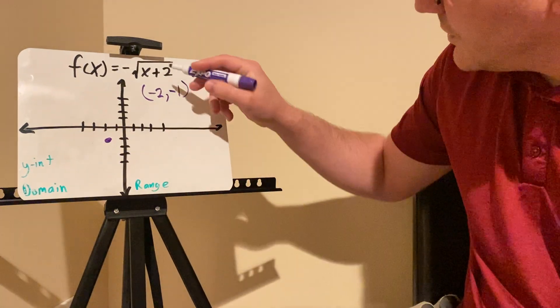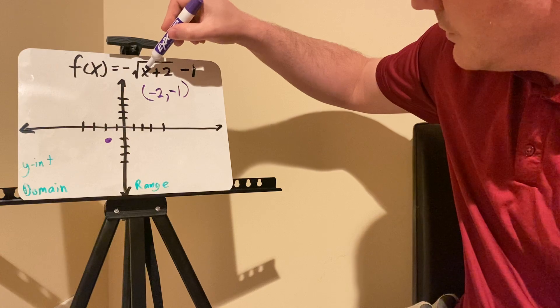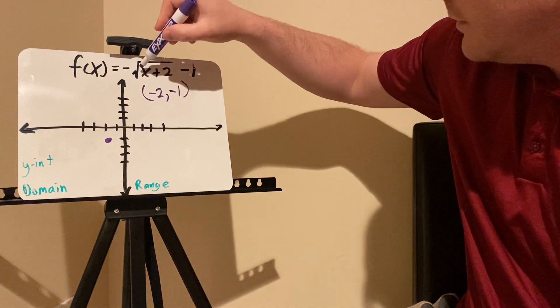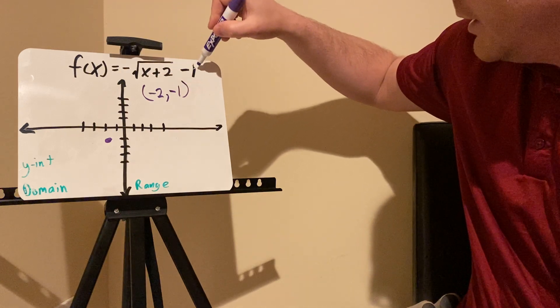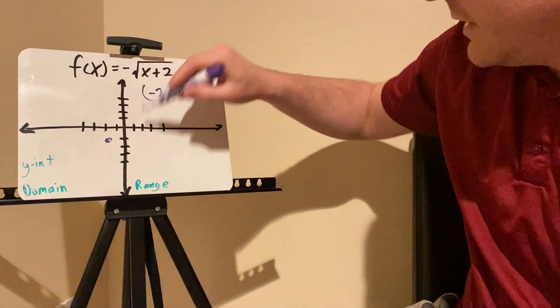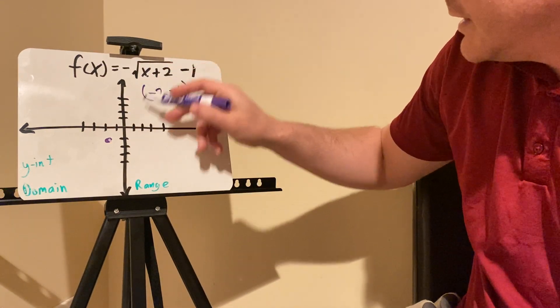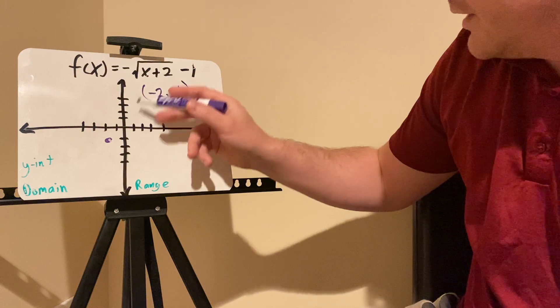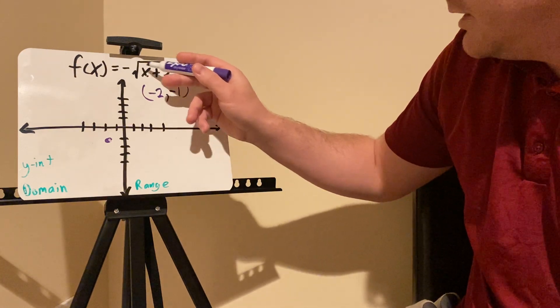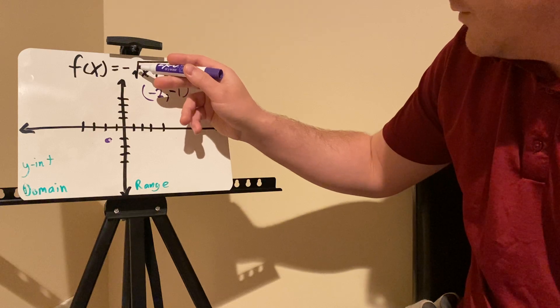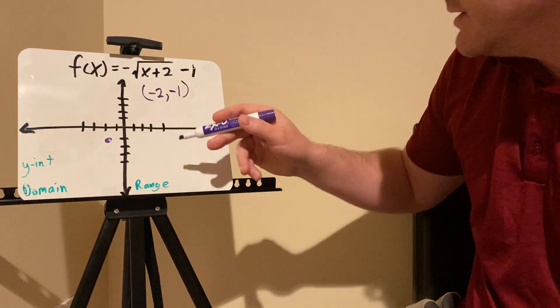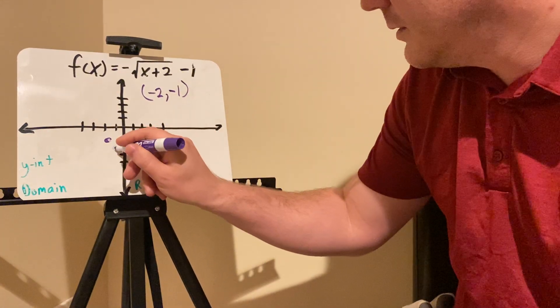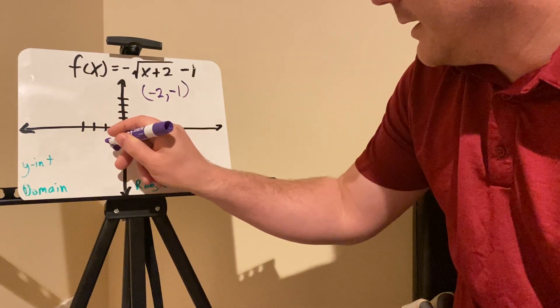And that will be my initial value. And I would just say that means that if x is negative 2, negative 2 plus 2 is 0. The square root of 0 would be 0. So that would still be negative, and 0 minus 1 is negative 1. So at that point, negative 2, negative 1 is my initial value. Then as x increases from negative 2, so I go x is negative 1 plus 2 is positive 1. The square root of positive 1 is 1. Make that negative to negative 1. Negative 1 minus 1 is negative 2. So when x is negative 1, y is going to be negative 2.